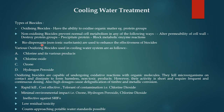Types of biocides: Oxidizing biocides have the ability to oxidize organic matter or protein groups. Non-oxidizing biocides prevent normal cell metabolism in any of the following ways: alter permeability of cell wall, destroy protein groups, block respiratory protein, and block metabolic enzyme reactions. Biodispersants, which are non-ionic surfactants, are used to enhance the effectiveness of biocides.